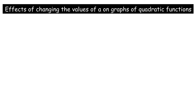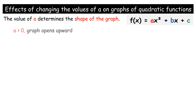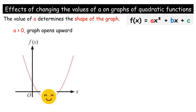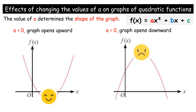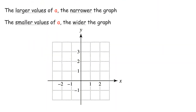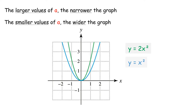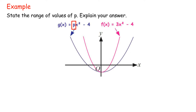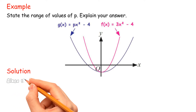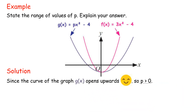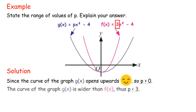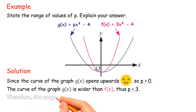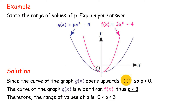The effects of changing the values of A on graphs of quadratic functions: the value of A determines the shape of the graph. If A is greater than zero, then the graph opens upward. If A is less than zero, then the graph opens downward. The larger the values of A, the narrower the graph. The smaller the values of A, the wider the graph. Example: state the range of values of P and explain your answer. Solution: since the curve of the graph G(x) opens upwards, P is greater than zero. The curve of G(x) is wider than F(x), thus P is less than 3. Therefore, the range of values of P is P greater than zero but less than 3.